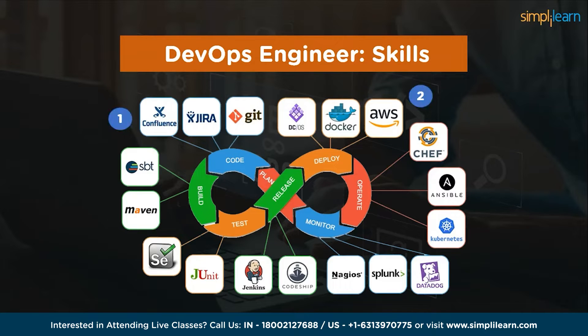Next, having good knowledge of deployment tools is also necessary. Tools like DCOS provide orchestration capabilities for distributed applications, Docker enables containerization for consistent and scalable deployments, and AWS offers a broad range of cloud services for infrastructure provisioning, scalability and managed services.